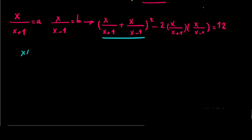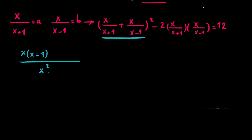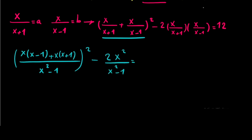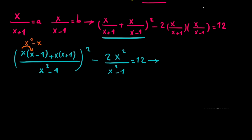So in this case I can write it as: x times (x-1) plus x times (x+1), all over x squared minus 1, squared, minus 2 times x squared over x squared minus 1, and that equals 12.